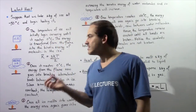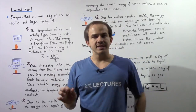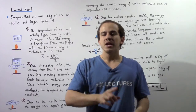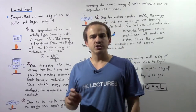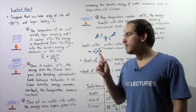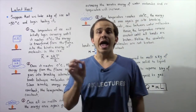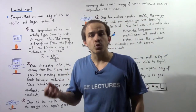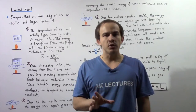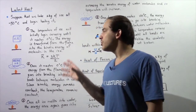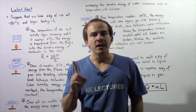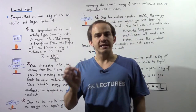Once the ice reaches zero degrees Celsius, the energy coming from the flame is no longer going into increasing the kinetic energy of the molecules. Now, the energy is going into breaking the intermolecular bonds between neighboring molecules found within the block of ice. And that's exactly why melting will take place.